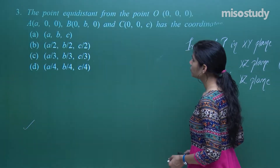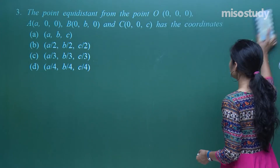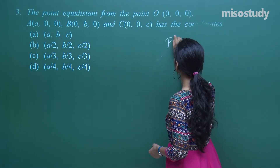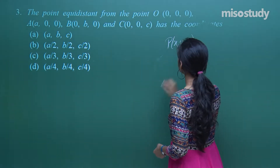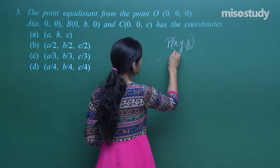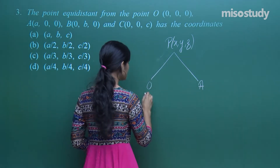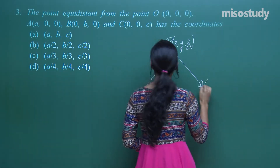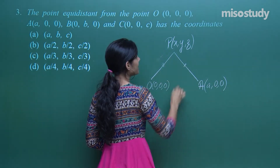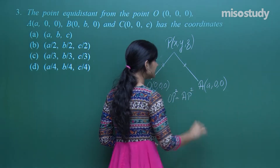The next question asks: what are the coordinates of a point P equidistant from O, A, B, and C? Using the distance formula, since P is equidistant from O and A, we have OP = AP, so OP² = AP². Here O is (0,0,0) and A is (a,0,0).